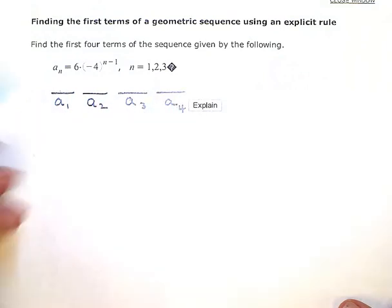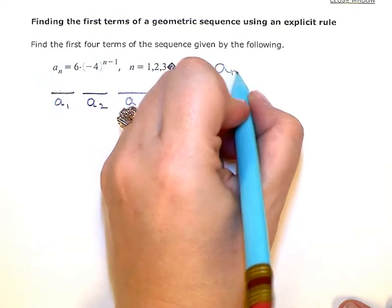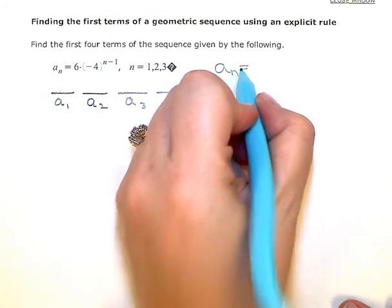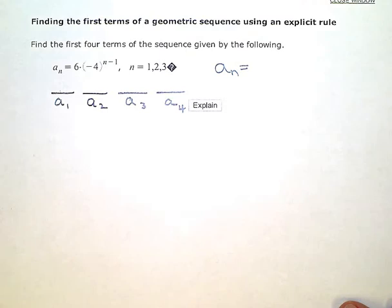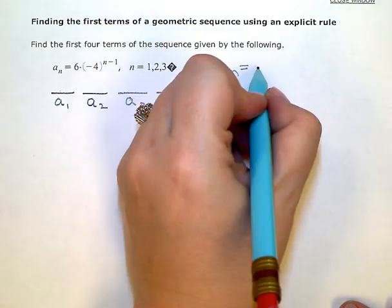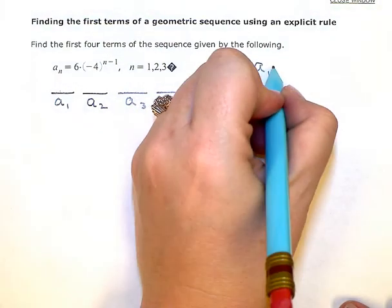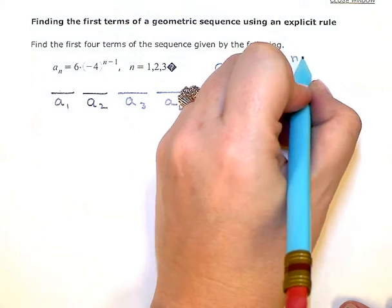The general form or the general explicit form for a geometric sequence is a sub n equals a sub 1 times r to the n minus 1.